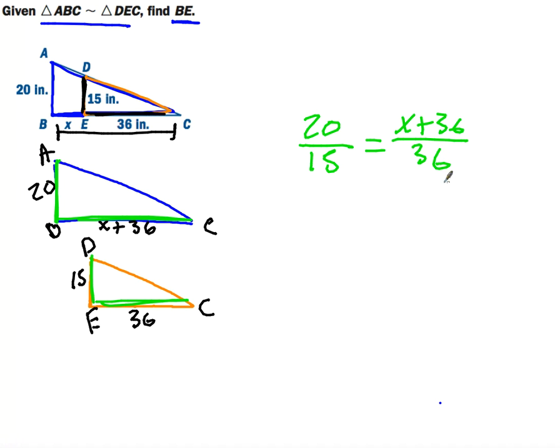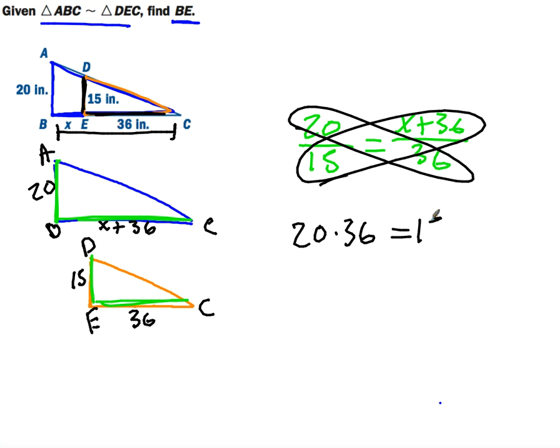Now when we cross multiply, it might be a little confusing. We have 20 times 36, which is going to equal 15 times the quantity X plus 36. So we have to do a little bit of distribution. We'll end up getting 15X plus 15 times 36, which is 540, and 20 times 36 ends up being 720.